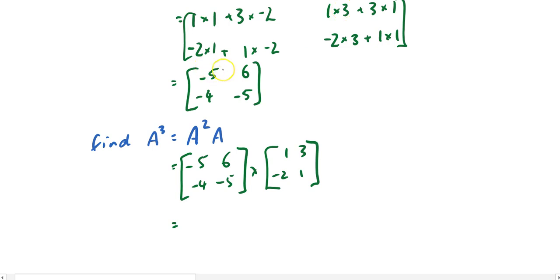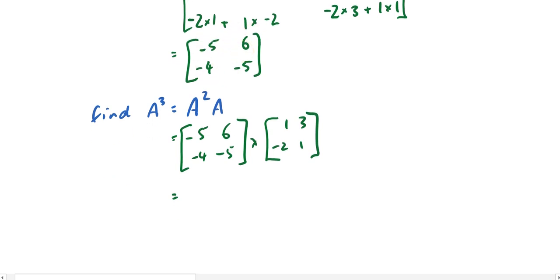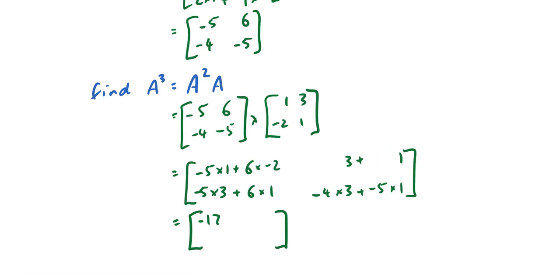And again, go through that process there and we should get a new answer here. So that shouldn't be that, negative 5 times 3, 6 times 1.